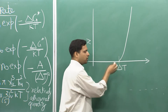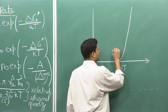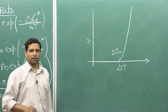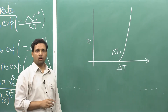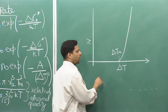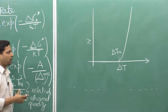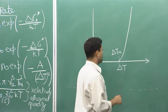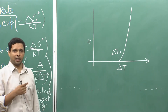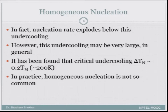There is a critical value, which we term ΔT_n, below which you will not see any nucleation. But if you go beyond this critical undercooling — decrease the temperature below this point — there is an explosion of nuclei and you will see a very large number of nuclei growing inside the material. The nucleation rate explodes below this undercooling.